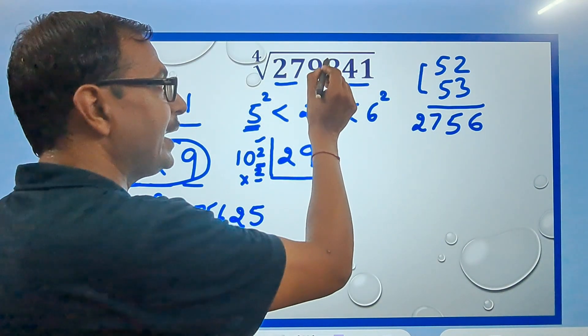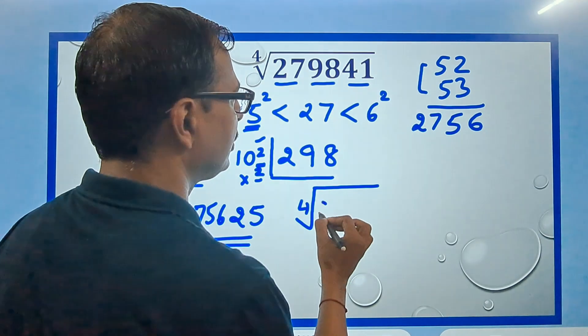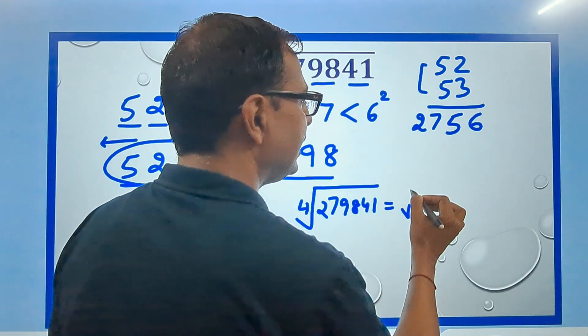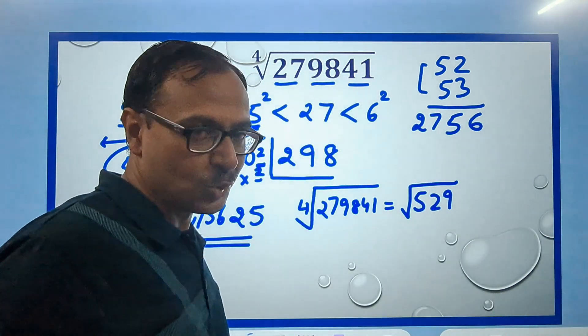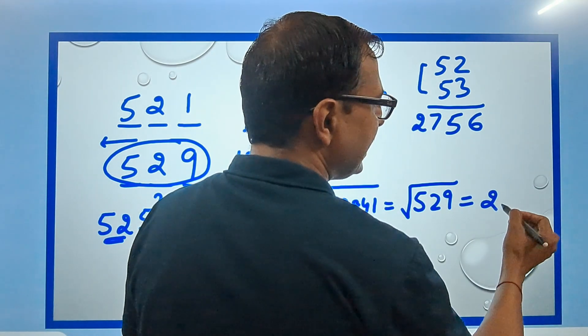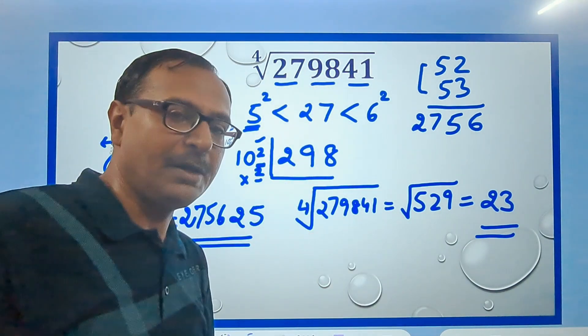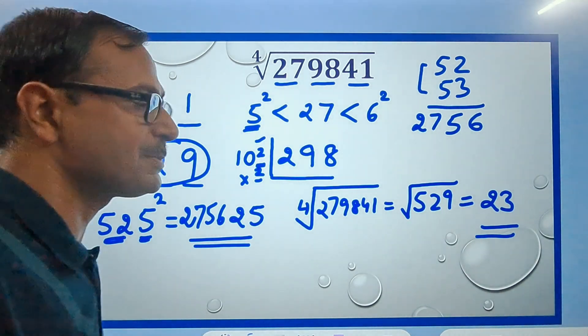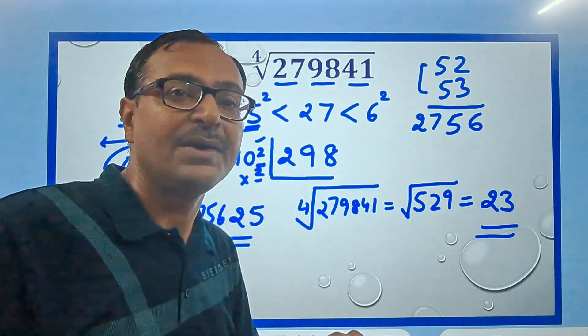529 is the square root of 279841. So the fourth root of this big number 279841 will be actually the square root of 529. And you should know the square root of 529. That's pretty easy, right? 23. 23 raised to power 4 is this big number. Pick up your calculators and check. See, I've taken around four, five minutes explaining this to you because I wanted to explain all the steps clearly.